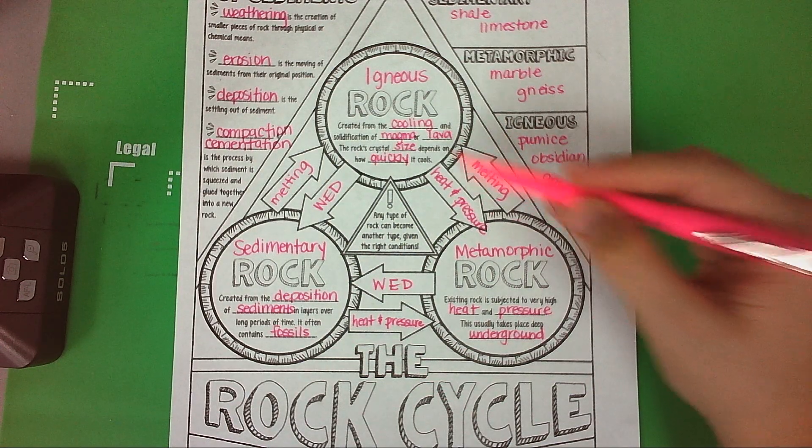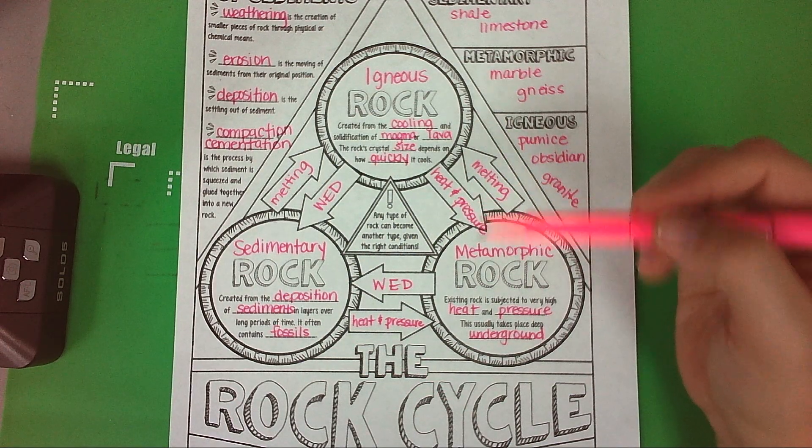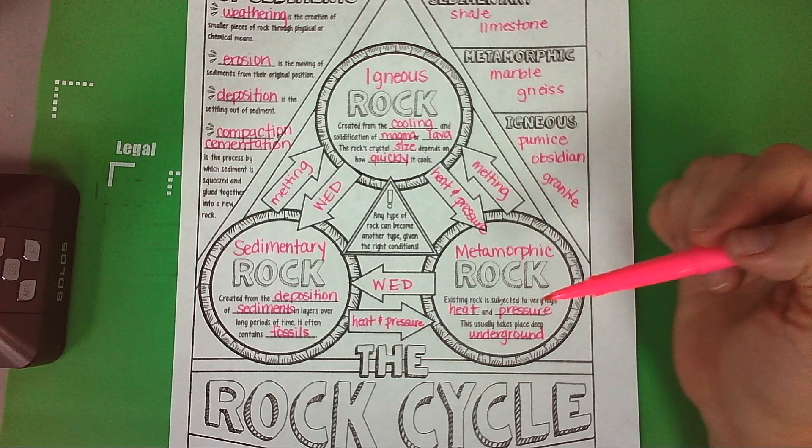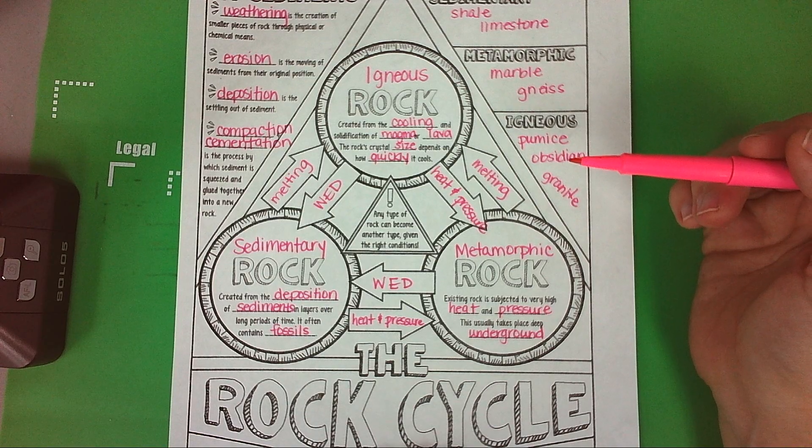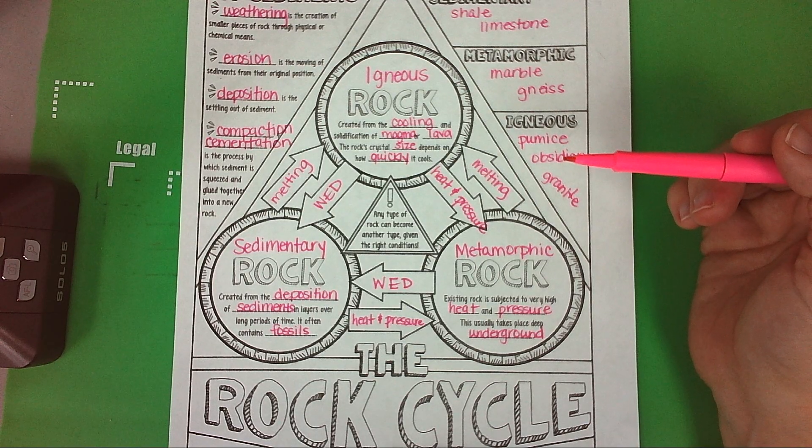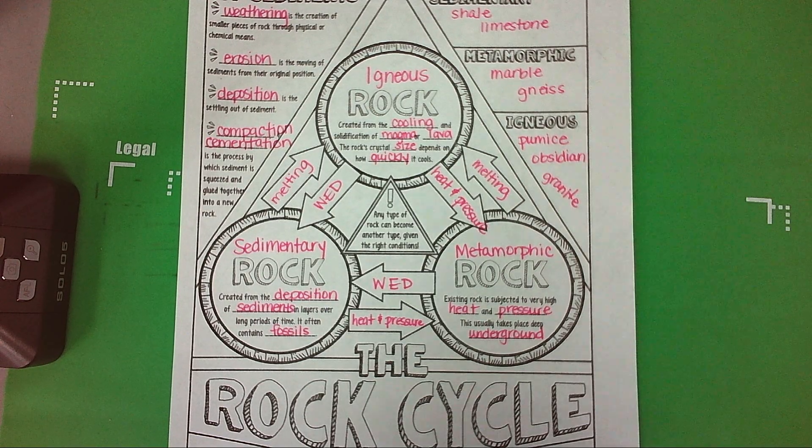Notice that the arrows are pointing both ways in both directions because they can change into each other. Remember that this should be colored and completed and put in your notebook as number fourteen, rock cycle doodle notes.